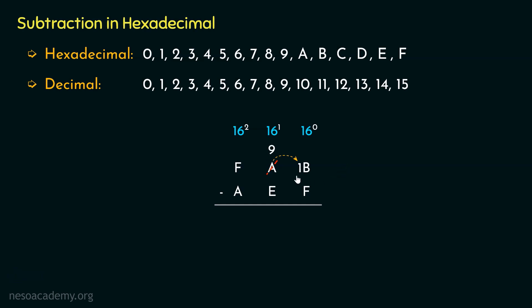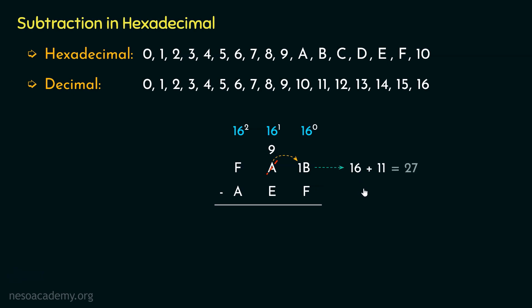Now we have got 1B in hexadecimal. Let's understand the value of hexadecimal 10 in decimal. 10 of hexadecimal comes after F, and F in decimal is 15, so hexadecimal 10 has the decimal value 16. When we borrow 1, we are actually borrowing 10 — that is 16. Adding B, which is 11, with 16 gives us 27 in decimal. So 1B of hexadecimal is actually 27 in decimal.